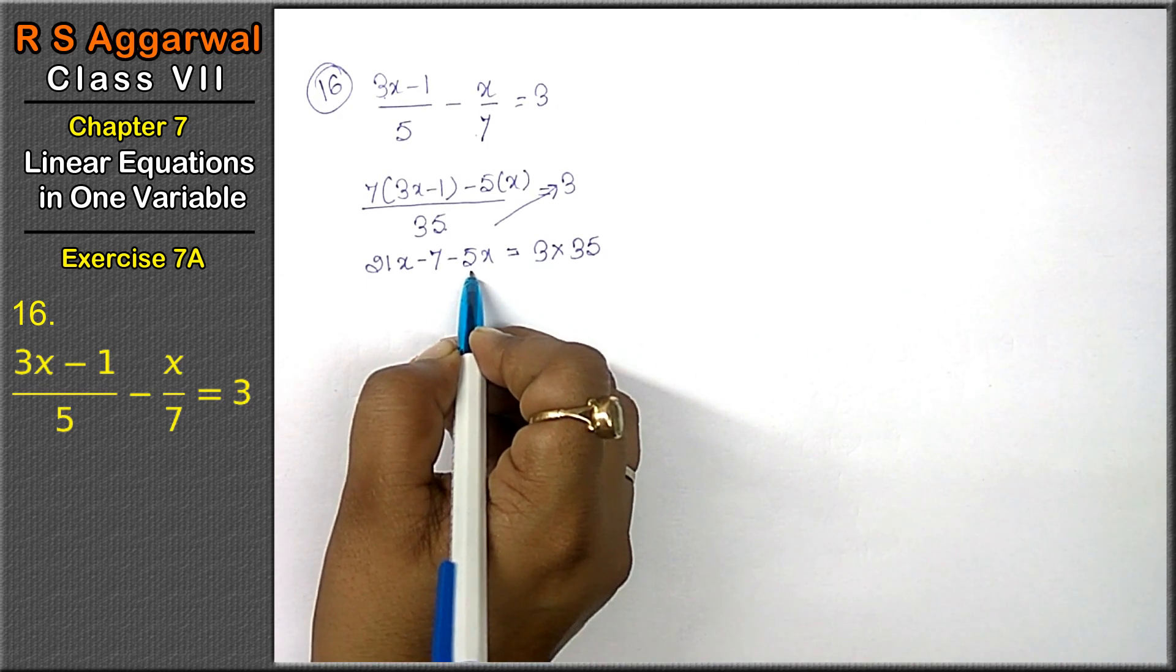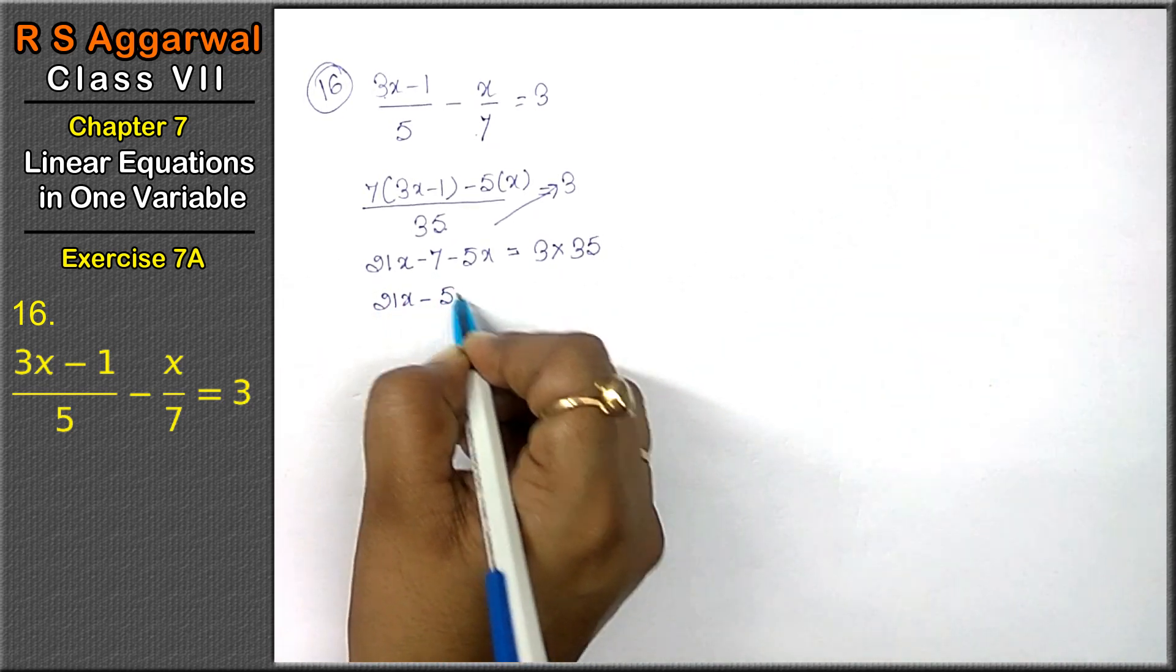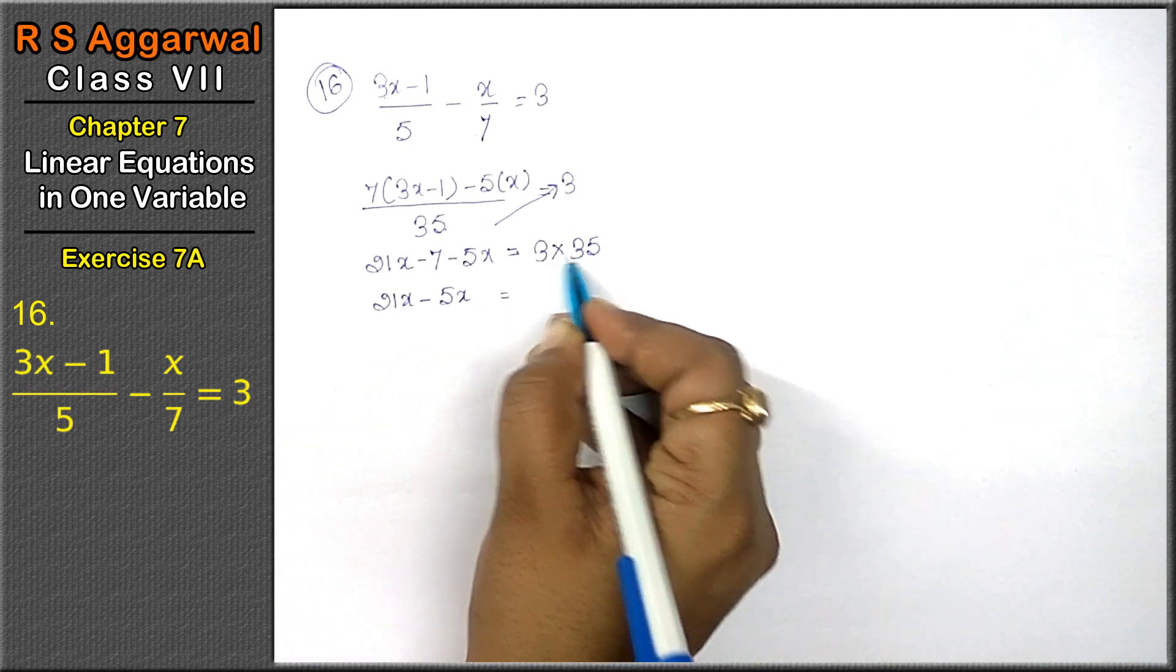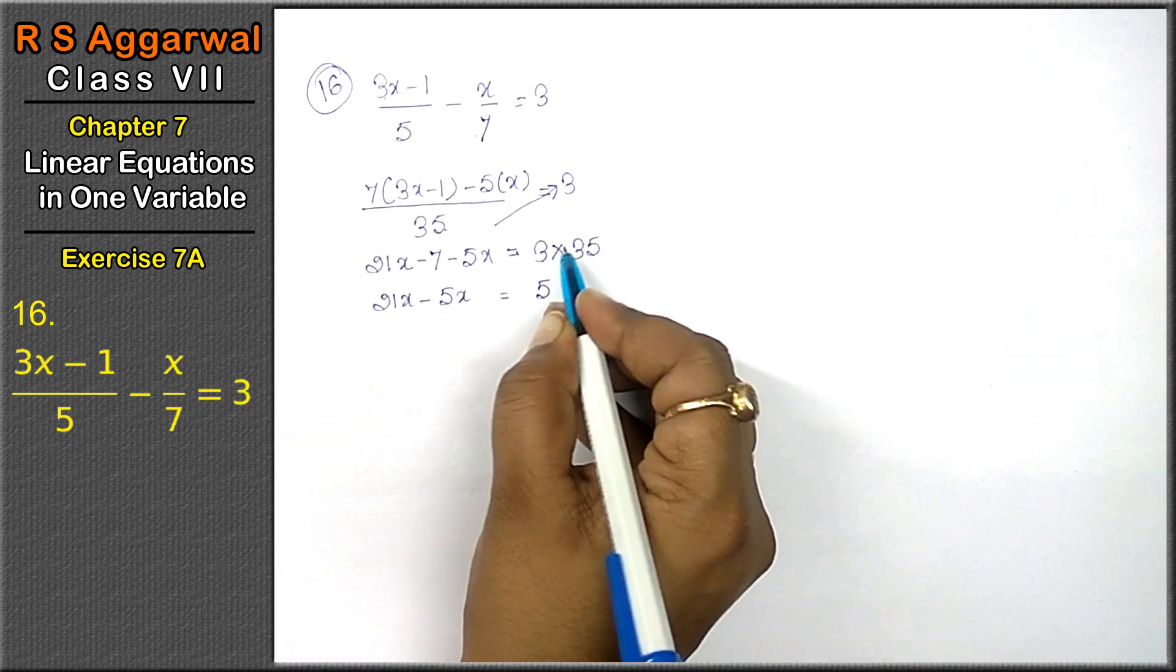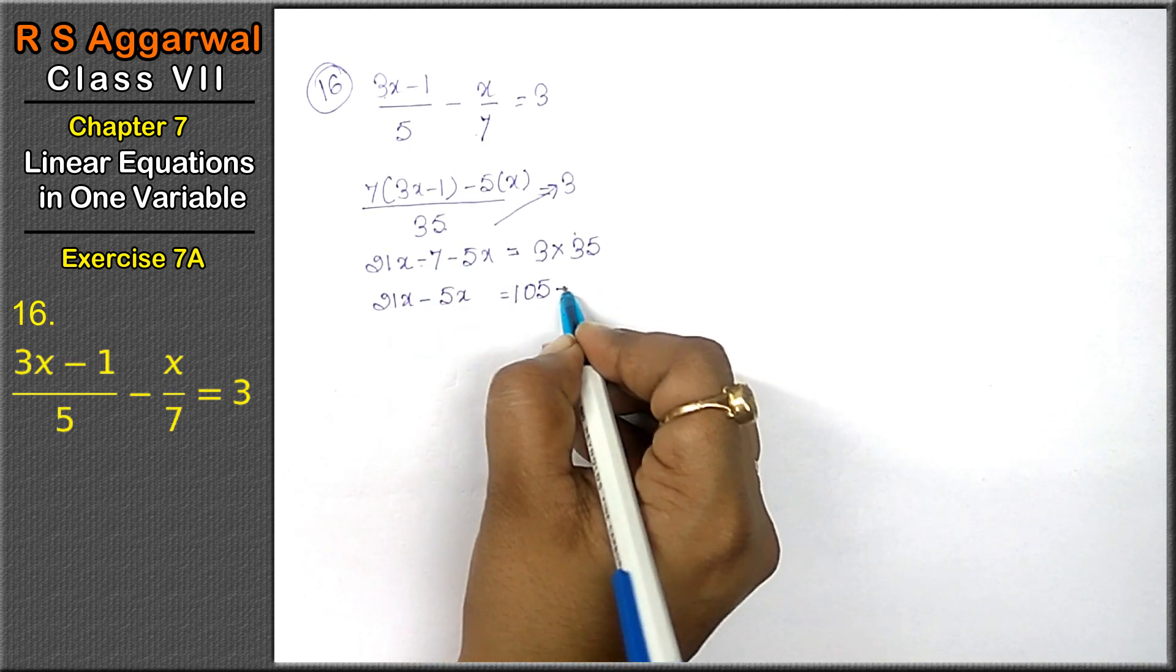21x minus 5x. The x terms are left-hand side. 3, 5's are 15. 3, 3's are 9 and 10. This minus will be divided here and plus.